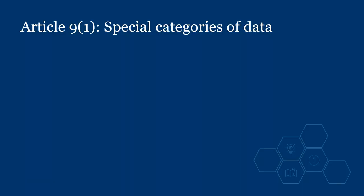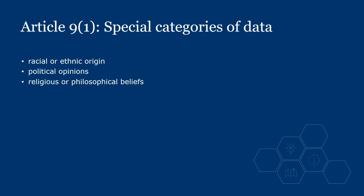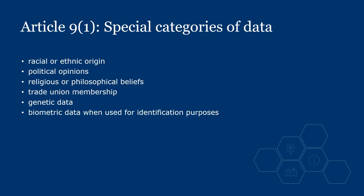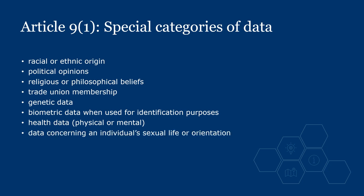Special categories of data are listed in Article 9 of the UK GDPR. These are data concerning: racial or ethnic origin, political opinions, religious or philosophical beliefs, trade union membership, genetic data, biometric data when used for identification purposes — which might involve using facial recognition technology or fingerprint scanning to identify an individual — health data, and data concerning an individual's sexual life or orientation.